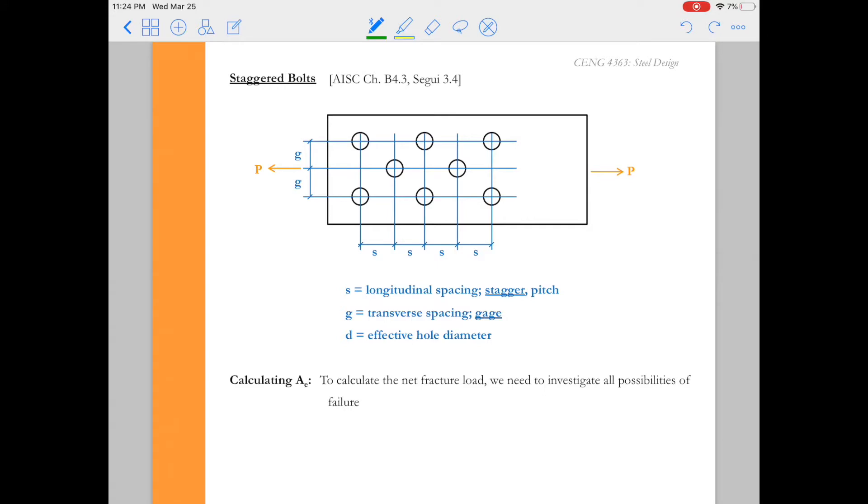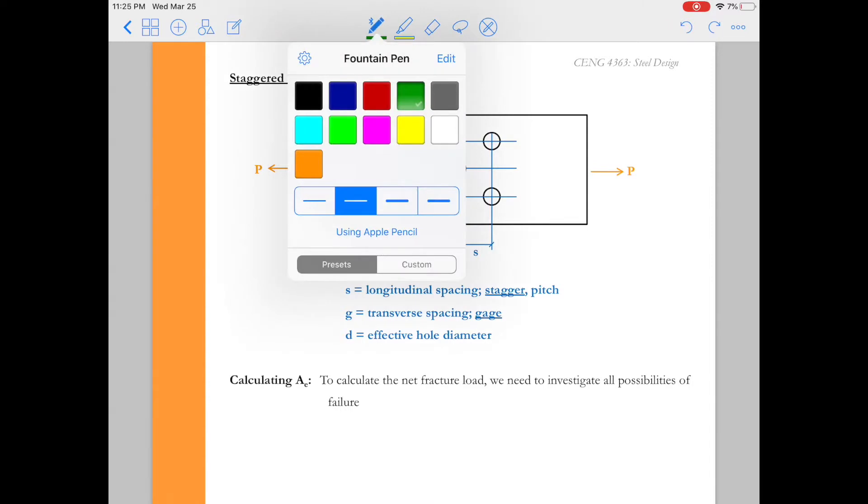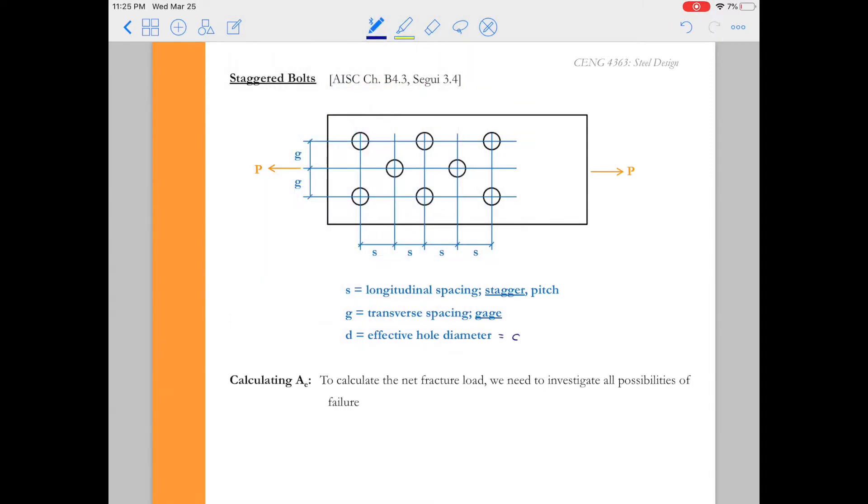Let's come up with an expression now to figure out how do we get that net section area for a staggered bolted connection. Before we do that we have to learn a little bit of vocabulary for staggered connections. So the first is S. S is the longitudinal spacing or what we call the stagger of the connection. G is the transverse spacing and that is what we also refer to as the gauge. And lastly we'll have to deal with the effective hole diameter. And again as we talked about for a fracture this is going to be the diameter of the bolt plus an eighth of an inch.